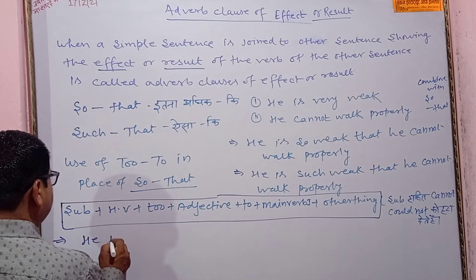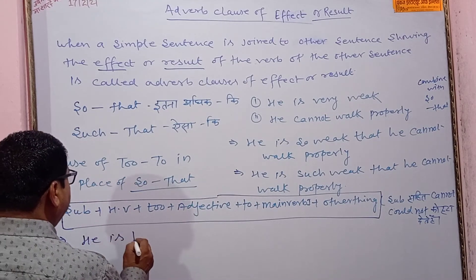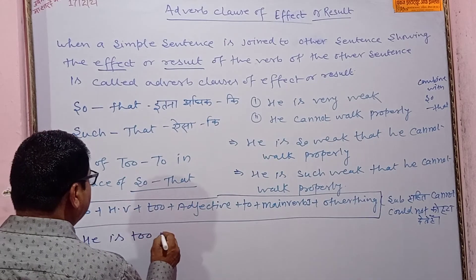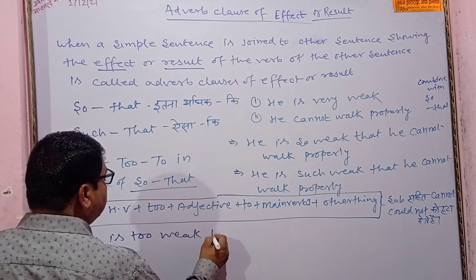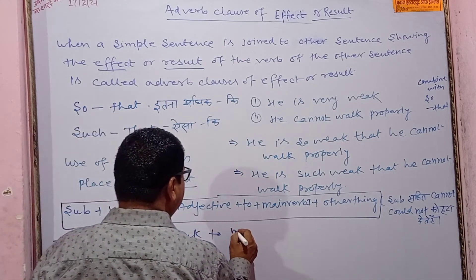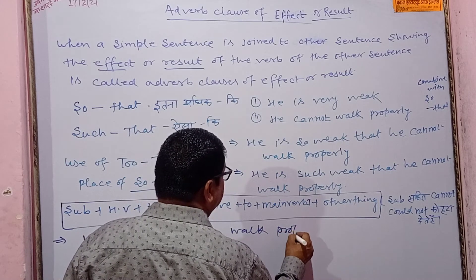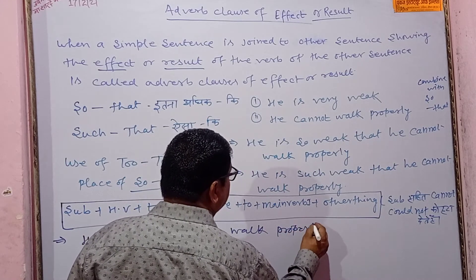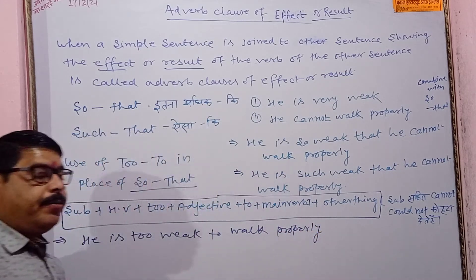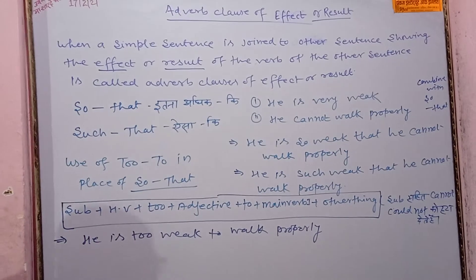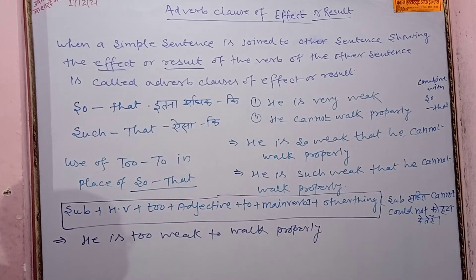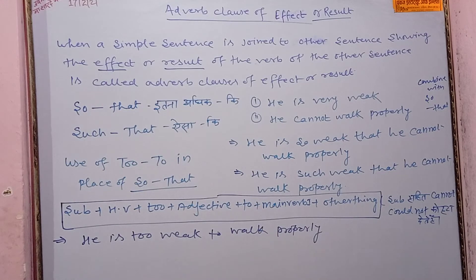Using 'too...to': 'He is too weak to walk properly.' So this is an example of combining with 'so that' and converting it using 'too...to'.